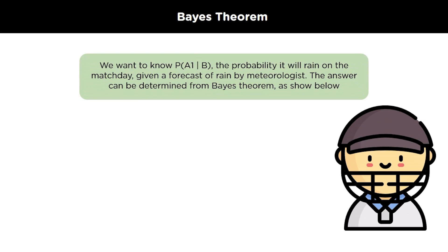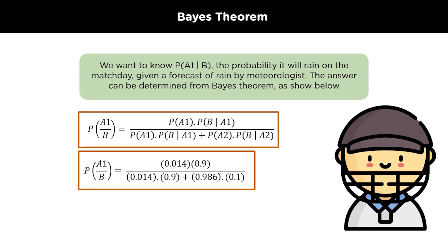Combining all this, we can calculate P A1 slash B that is the probability it will rain on the given match day given a forecast of rain by meteorologist. The answer can be determined using the Bayes theorem as shown below. So here is the formula of the Bayes theorem and putting all the values that we have calculated in the previous slide. The probability that it will rain on the match day given a forecast of the rain by meteorologist will come out to be 0.111 which will be equal to 11.11%. So, there is an 11% chance that it will rain on the match day given that the meteorologist has predicted the rain. I hope this example is clear to you.